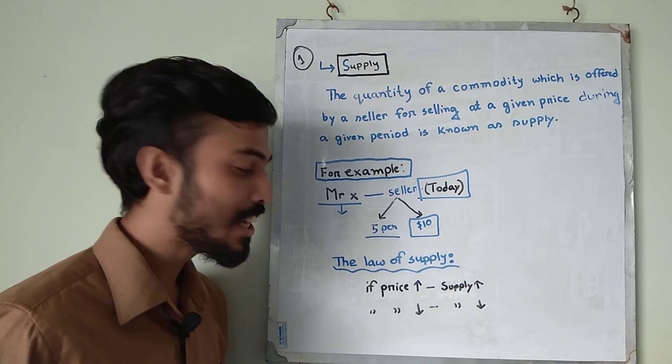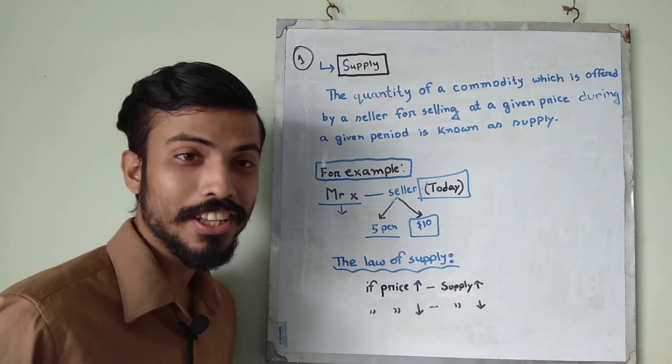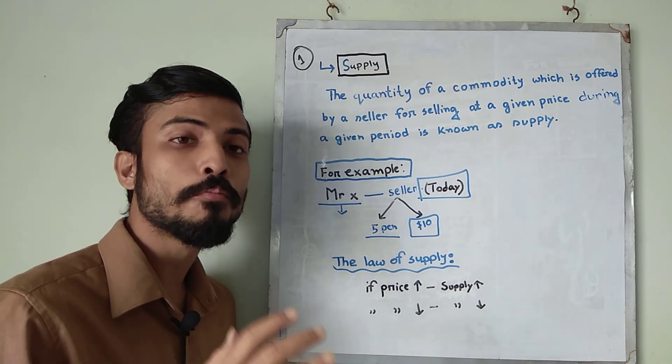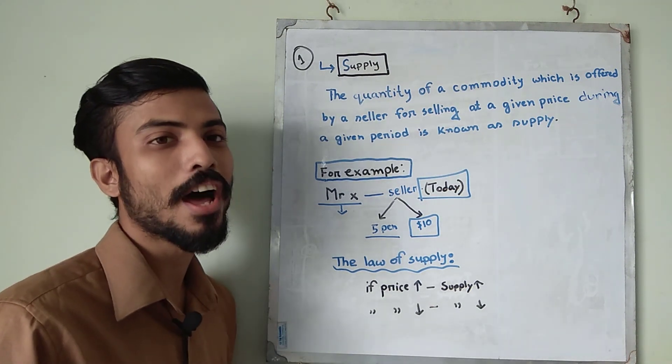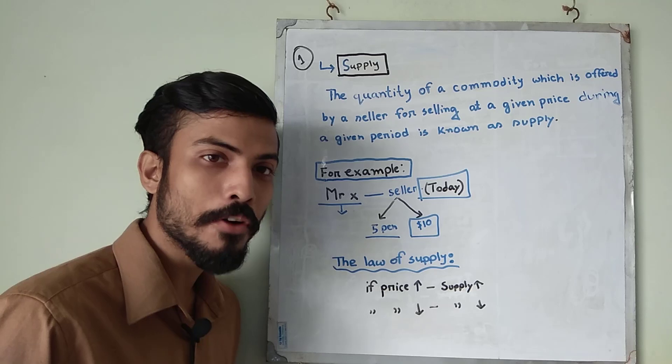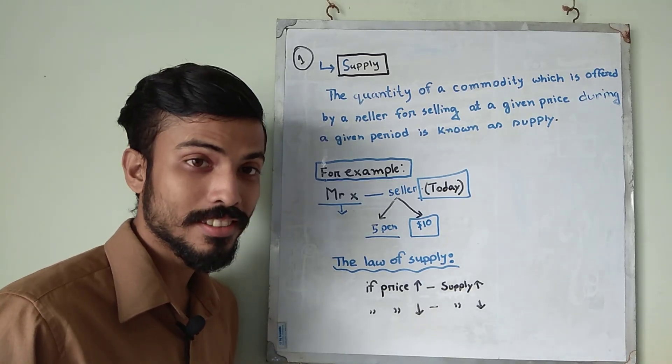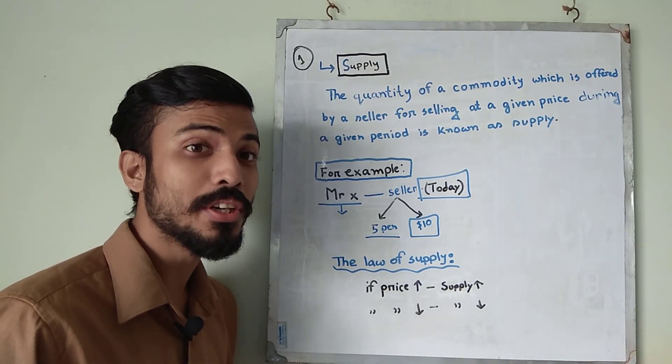Now we learn the law of supply. The law of supply says that if price increase supply will increase and if price decrease then supply will decrease. Now we will try to understand how it works.